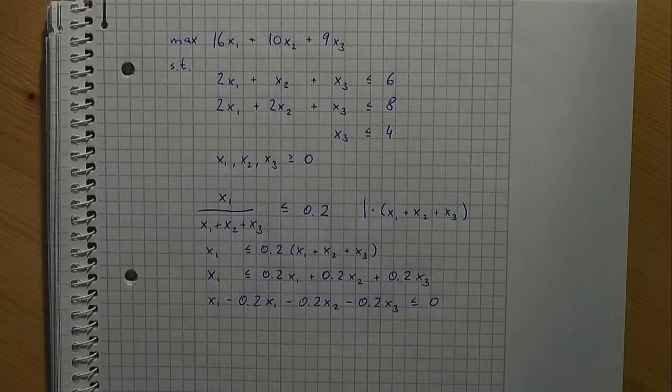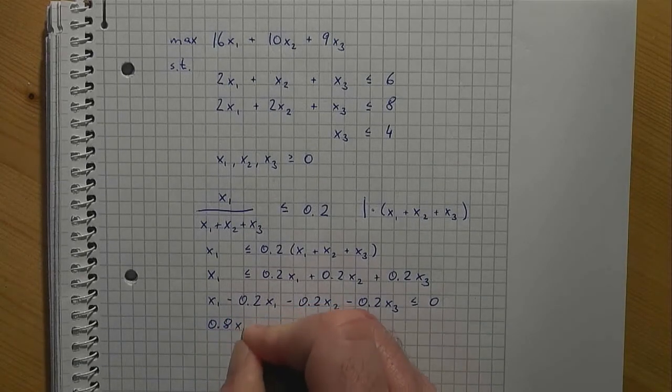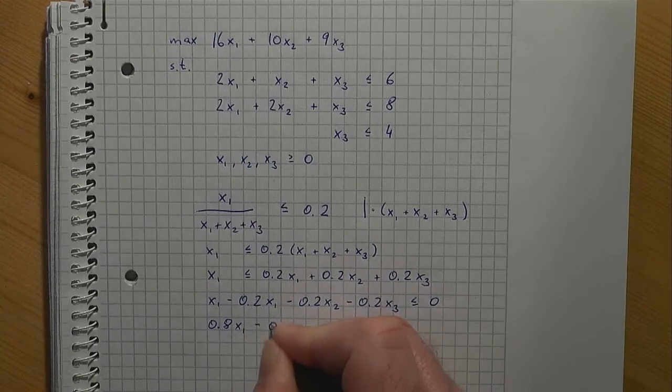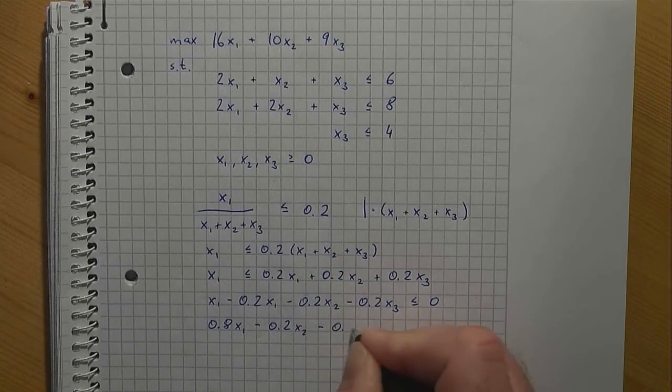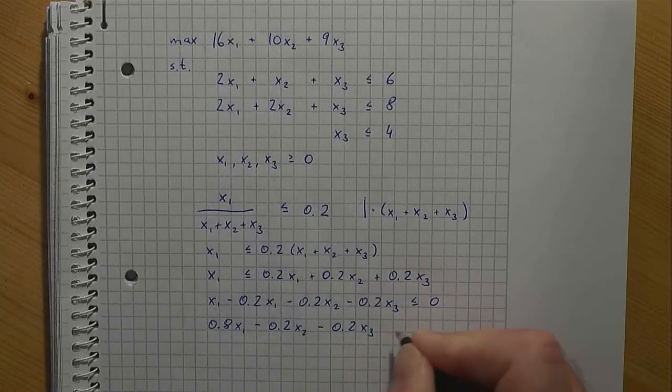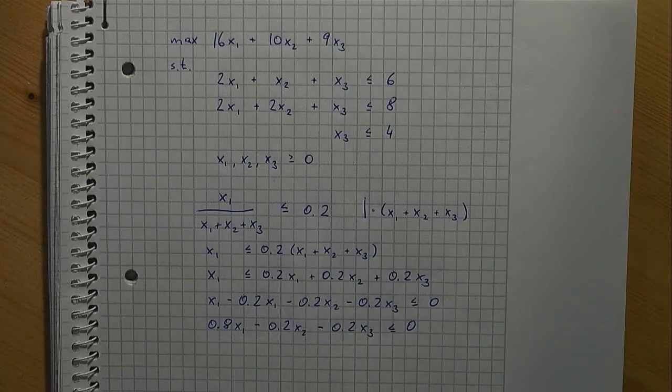Finally, we can simplify the left-hand side a bit. This is a very compact, linear constraint that makes sure that at most 20% of the furniture pieces are tables.